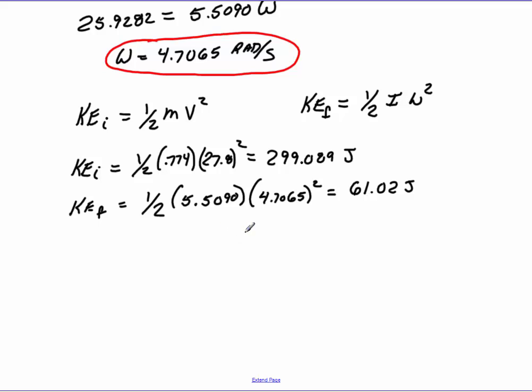If I wanted to find out the percentage that I've lost, I will take 61.02 minus 299.089, divide it by the initial, 299.089, and then we'll take all that, multiply that by 100 to get a percentage change. So minus 299.089 divided by 299.089, and I got approximately 79.6%.